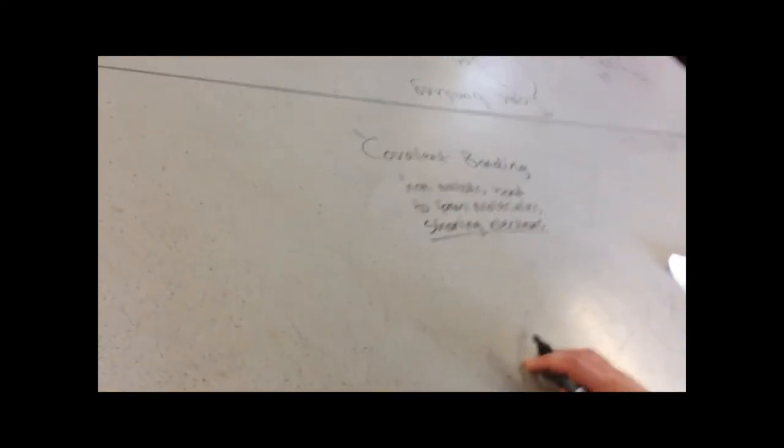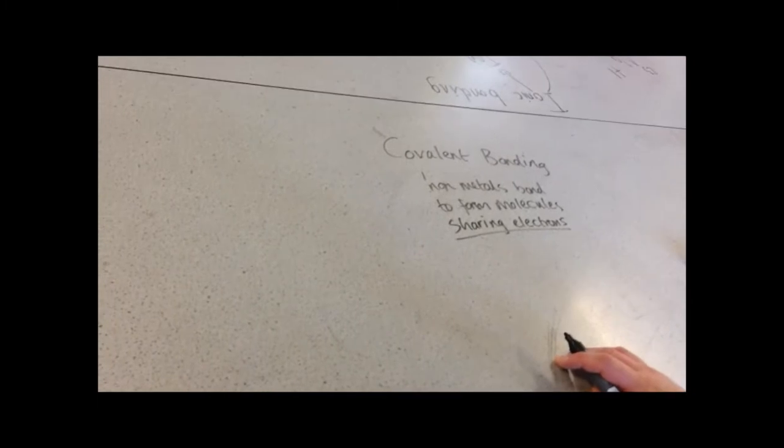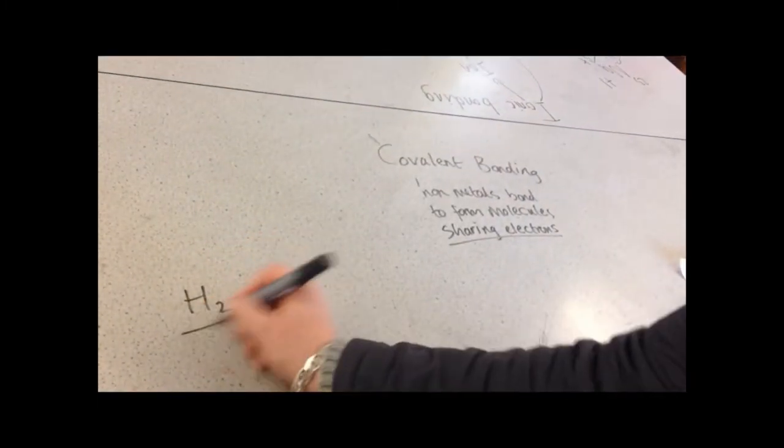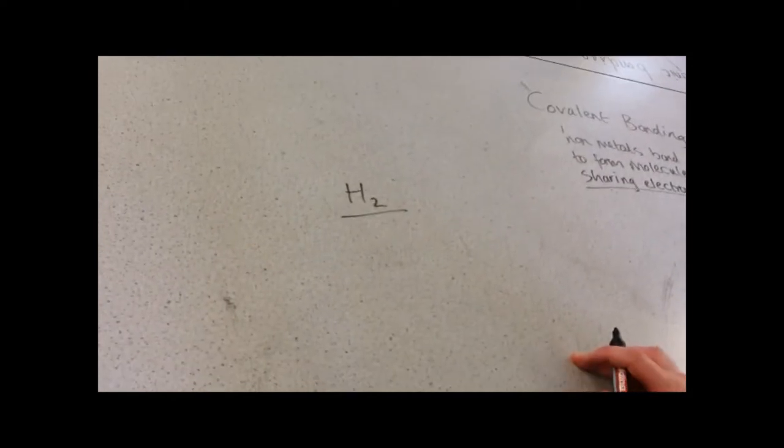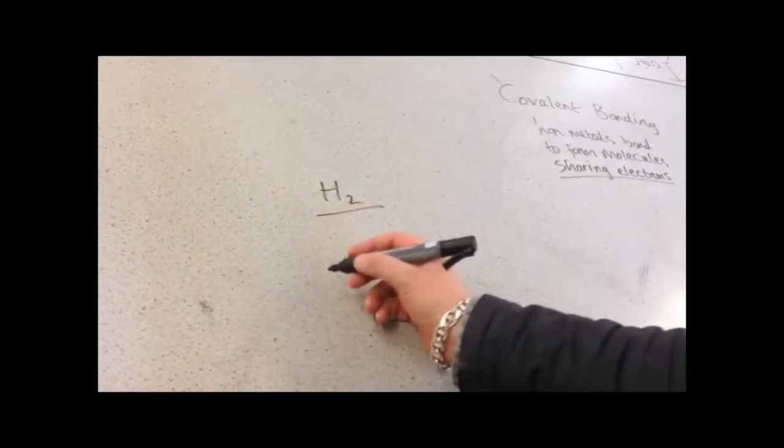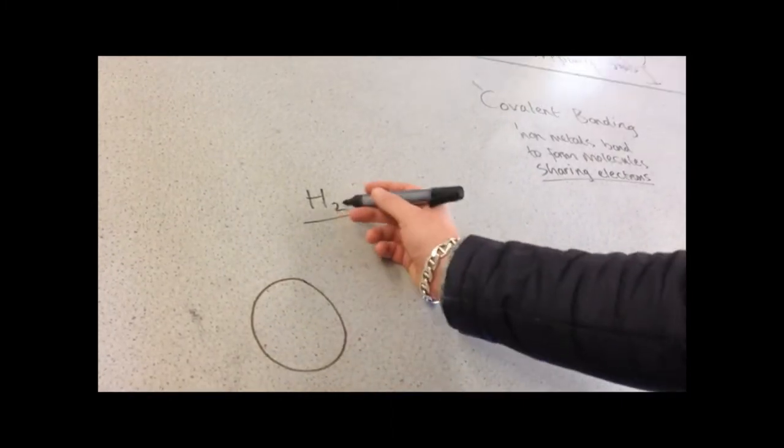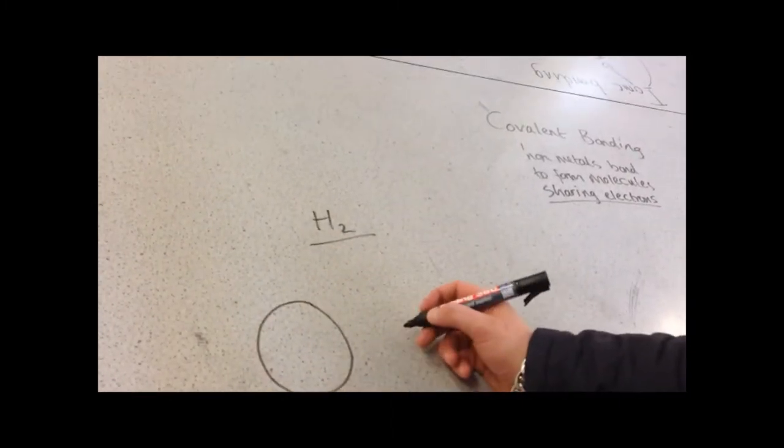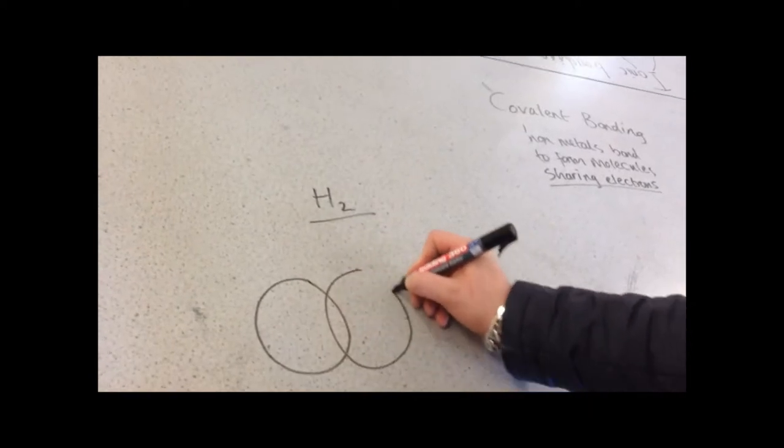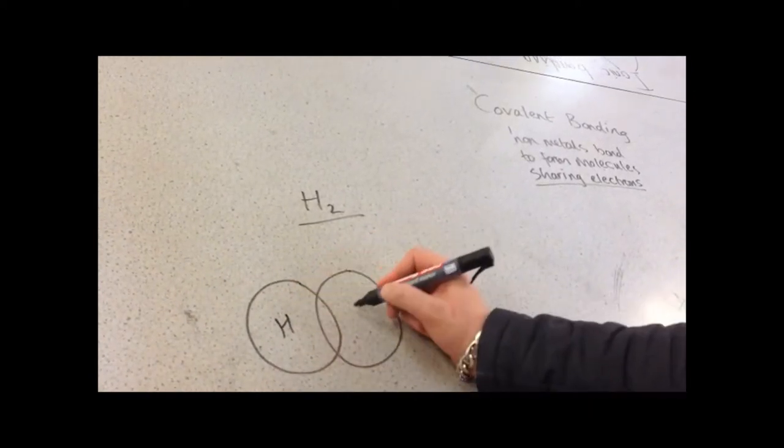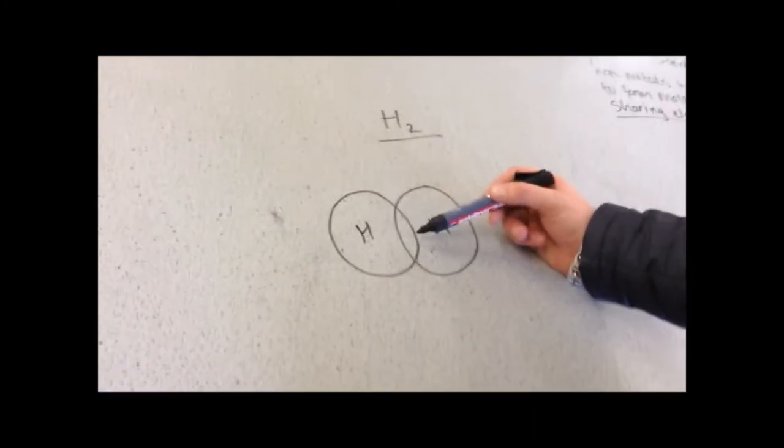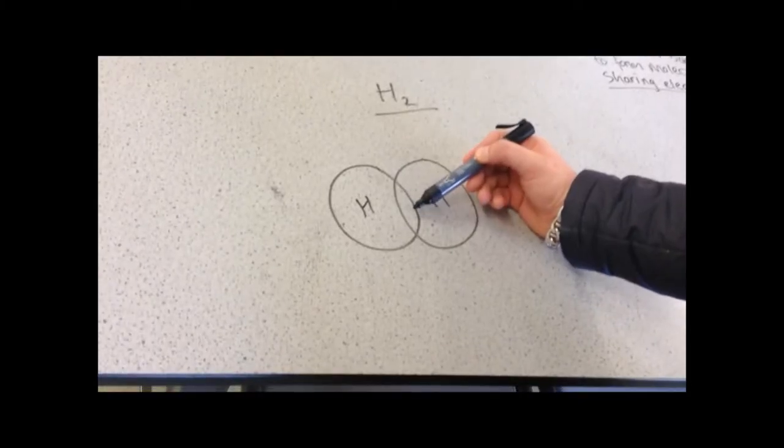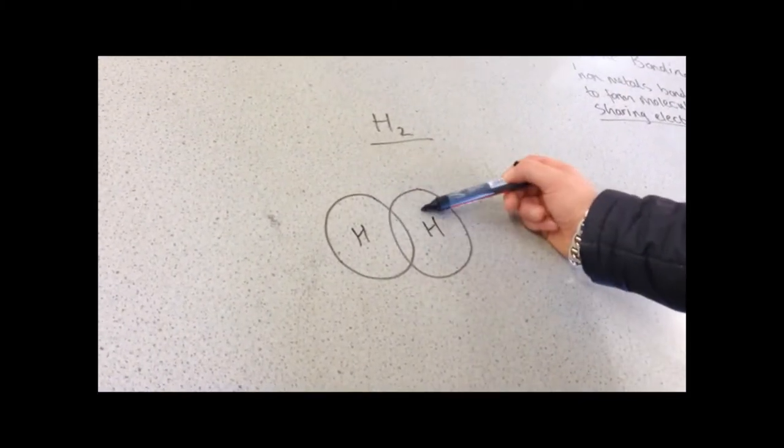We're going to look at a molecule that contains non-metals. My first example will be H2. When we're drawing covalent bonding, different to ionic bonding, we only draw the outer shell. H2 has two atoms of hydrogen. The way we draw it is almost like a Venn diagram - we draw it so that the two atoms are overlapping. In this position here is where we can draw the electrons that are being shared by both atoms.